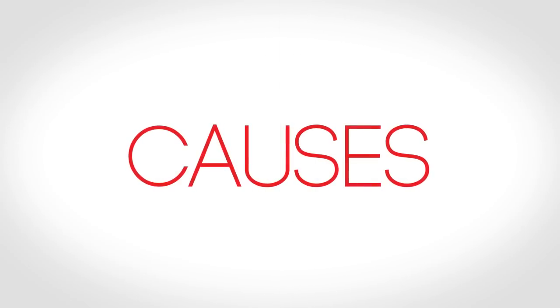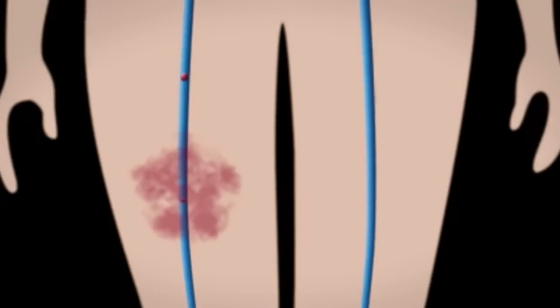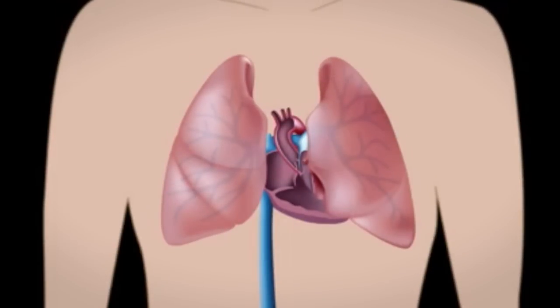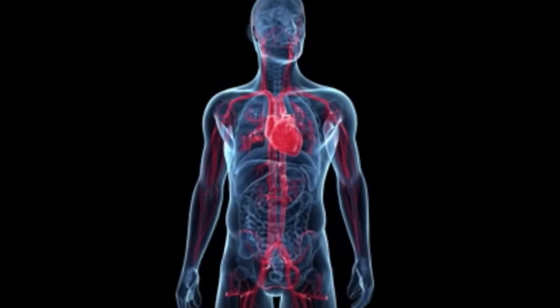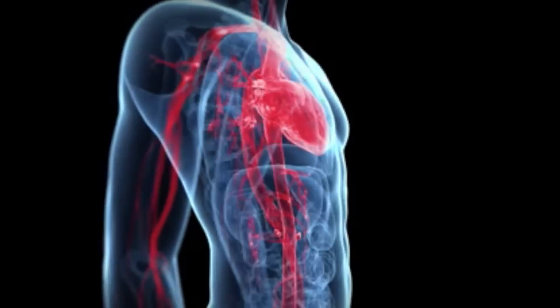The most common cause of pulmonary embolism is deep vein thrombosis, abbreviated as DVT. In a DVT, a blood clot originating in a deep vein travels through blood circulation to get stuck in one of the blood vessels of the lung. This detached thrombus is known as an embolus. Most DVTs originate from the veins in the legs or the pelvis. In rare cases, a PE may originate from a blood clot in the arm veins or from a thrombus originating from the heart.